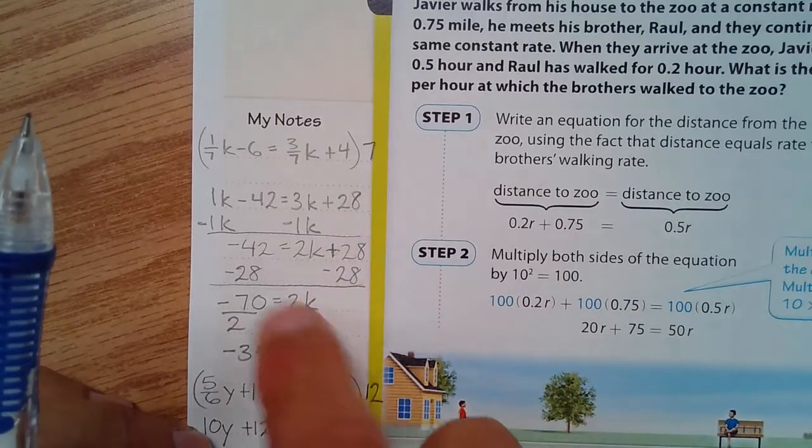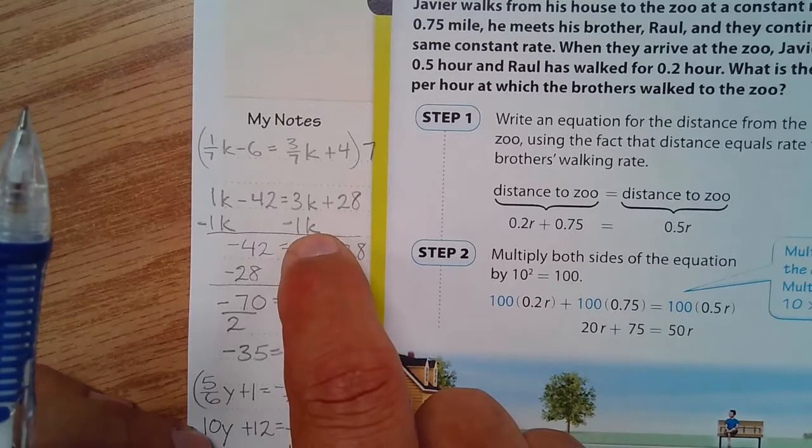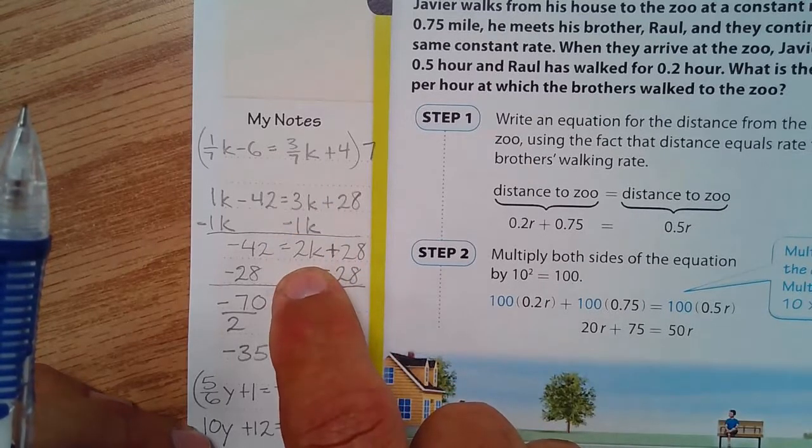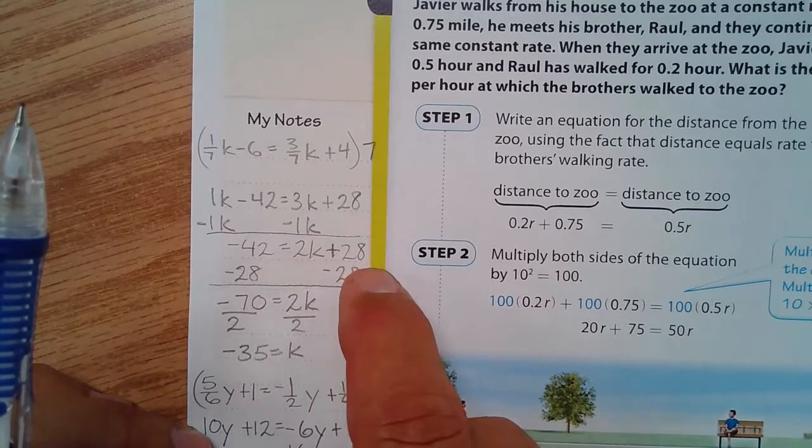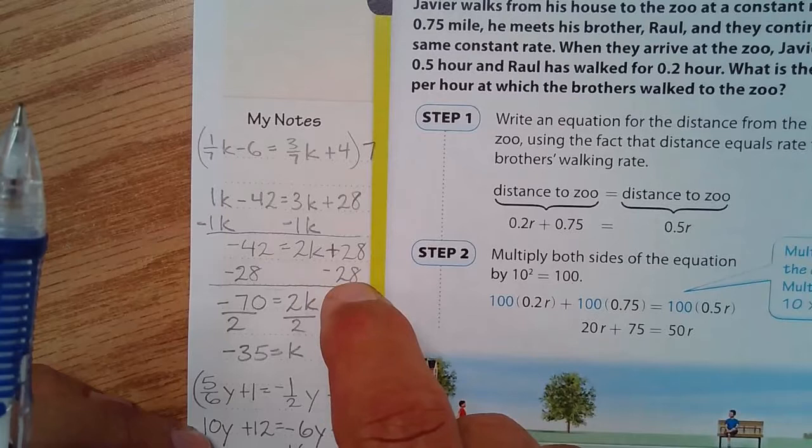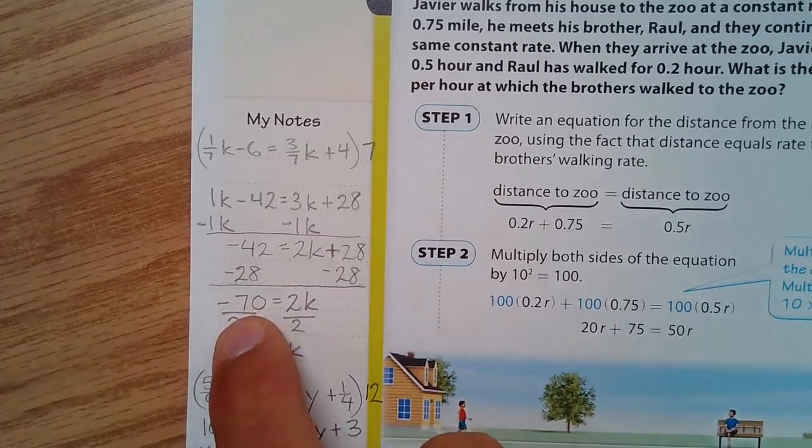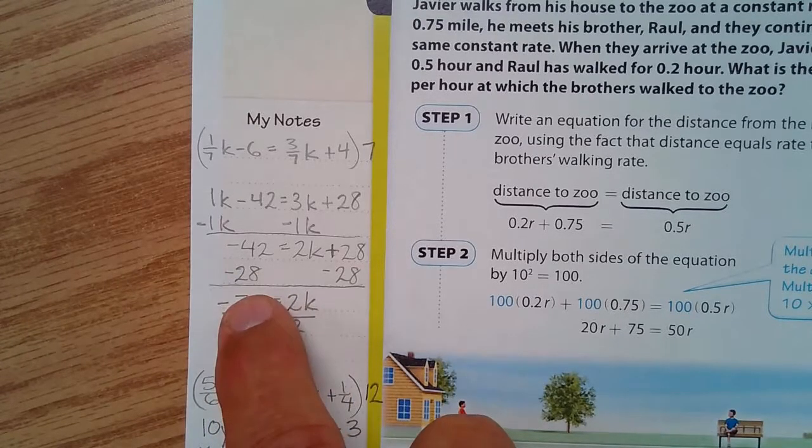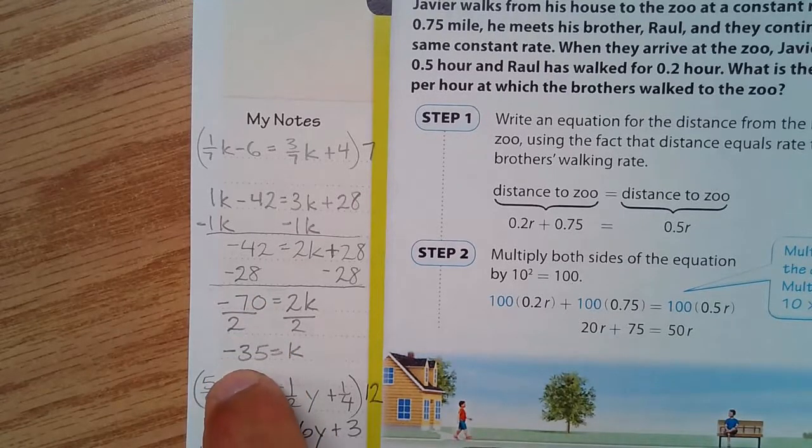And four times seven is 28. Now I'm going to get the variable terms on one side, and I have 3k minus 1k is 2k, and then I'm going to write down the rest, negative 42 equals 2k plus 28. Then I'm going to use additive inverses again to move the 28 to the other side, and negative 42 plus negative 28 is negative 70, and that equals 2k. So I have to divide negative 70 divided by 2 to arrive at negative 35 for k.